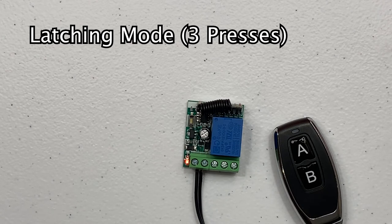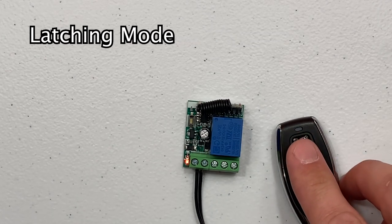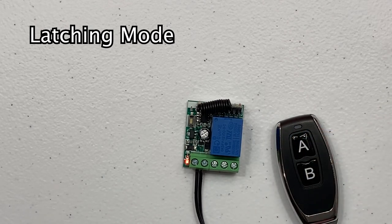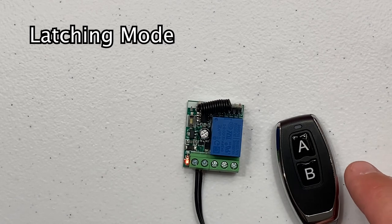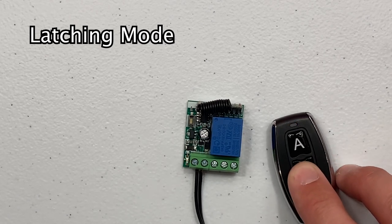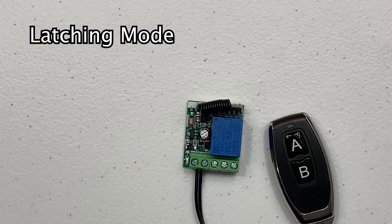In latching mode, the relay must be paired with two buttons on the transmitter. The first button will trigger the on state and the second button pressed will trigger the off state. Press the desired button for the on state, the red LED will blink twice indicating it has learned the remote and then remain illuminated, indicating it's waiting for the second button. Press the desired button for the off state and the red LED will blink twice again and then shut off indicating pairing is complete.